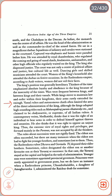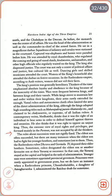A contemporary writer, Medhatithi, thinks it was the right of an individual to bear arms to defend himself against thieves and assassins, and that it was right to oppose an unjust king. Thus, the extreme view of royal rights put forward mainly in the Puranas was not accepted by all thinkers. The rules about succession were not rigidly fixed. The eldest son often succeeded, but there are many instances when the eldest son had to fight his younger brothers and sometimes lost. The Rashtrakuta rulers Dhruva and Govinda IV deposed their elder brothers. Sometimes the ruler designated the eldest or another favourite son as Yuvaraja or successor, who stayed at the capital and helped in administration.